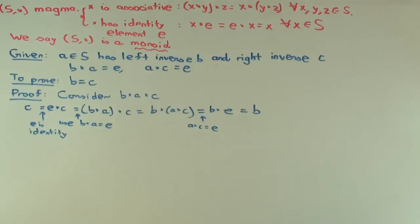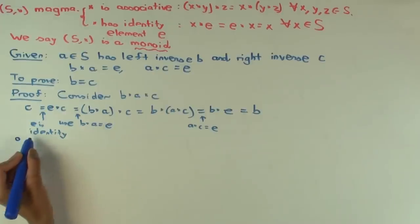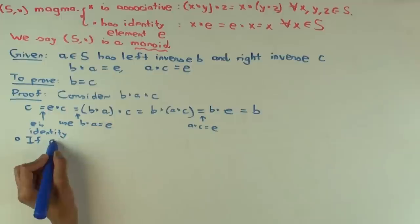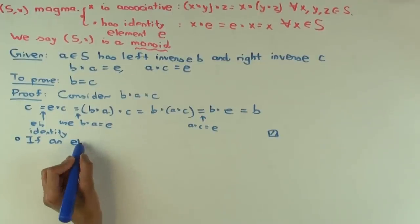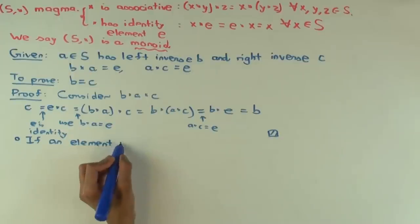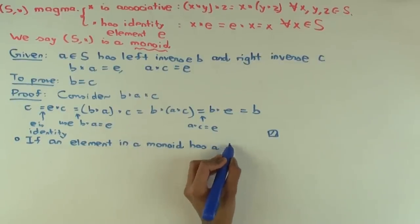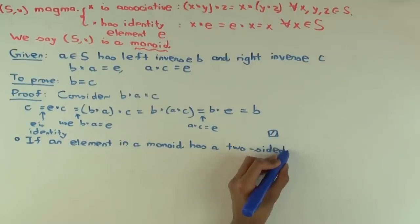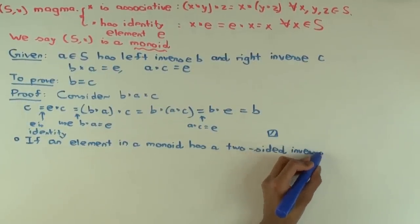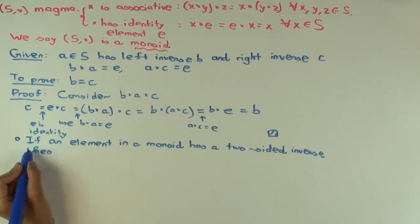Now, so let's try to understand why this is significant. There's two ways this is significant. The first is, the more important one is that you get an immediate corollary. If an element in a monoid has a two-sided inverse, then that's unique. Do you see why that's true? Yeah, you just proved it. Well, I actually proved something slightly different. So just explain why that's true.